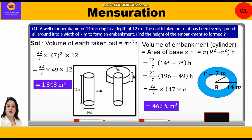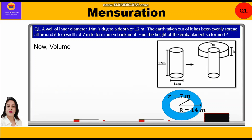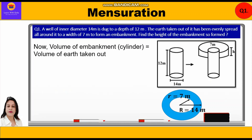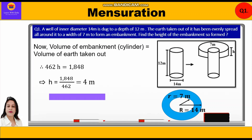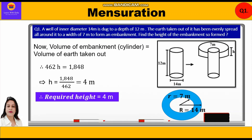On one side we have the volume of earth taken out from the well, and on the other side the volume of the embankment formed — both are equal. So: 462h = 1848, therefore height = 1848 ÷ 462 = 4 meters. The required height of the embankment so formed is 4 meters.